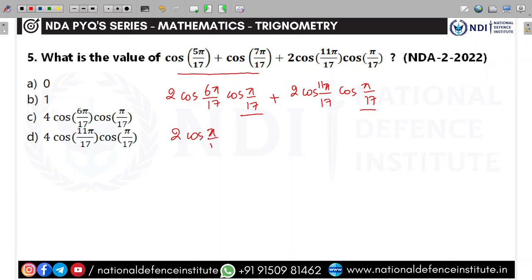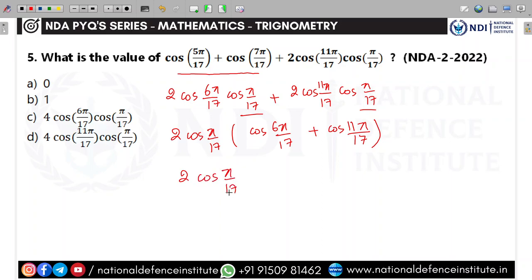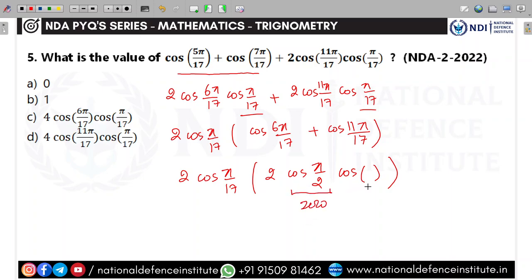Taking 2·cos(π/17) as common, we get the remaining terms as cos(6π/17) + cos(11π/17). Applying cos A + cos B again: 2·cos(π/17)·2·cos((6+11)π/(17·2)) = 2·cos(π/17)·2·cos(π/2). Since cos(π/2) = 0, the entire product is 0. Therefore the first option is correct.